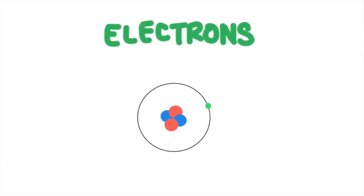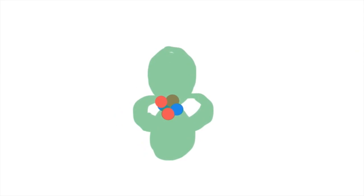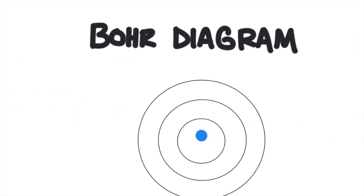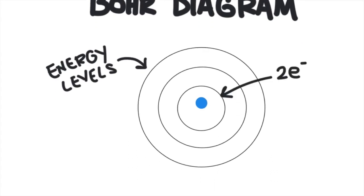Back to the electrons. Traditionally, electrons are shown orbiting the nucleus in rings. This isn't exactly how electrons move around the nucleus — in reality, electrons move around the nucleus in funny-shaped electron clouds. Electrons have a high probability of being somewhere inside these clouds, but we don't know exactly where they are. We're going to use a simple model that allows us to organize the electrons by the amount of energy they have. We call these rings energy levels. This model is called the Bohr model or Bohr diagram, named after the chemist Niels Bohr. Each energy level has a maximum number of electrons: the first ring can hold 2 electrons, and each ring after that can hold 8 electrons.